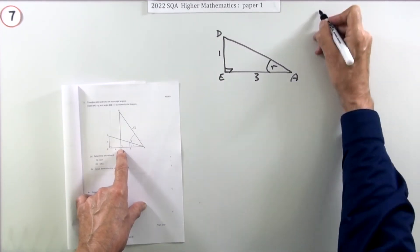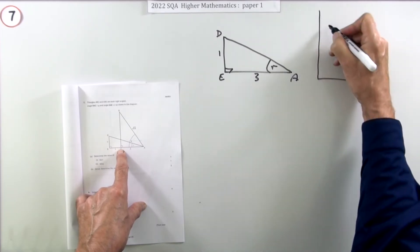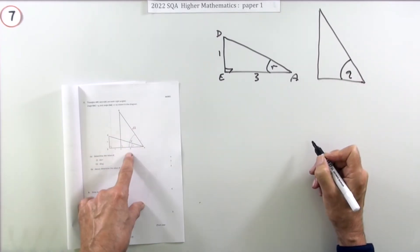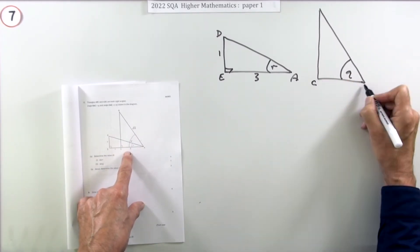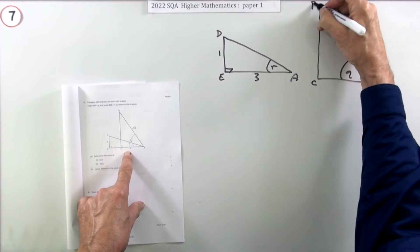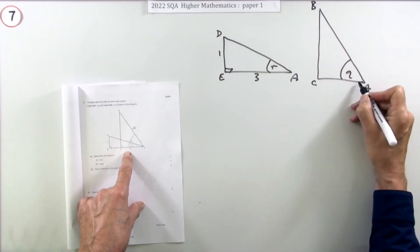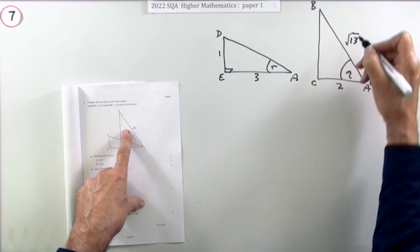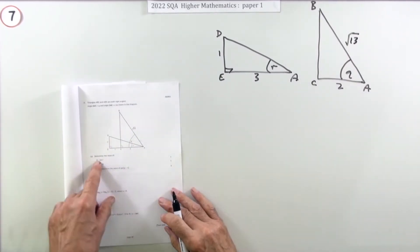The other triangle is this one. Not quite drawn to scale. This is the one with Q in it, the whole angle there. That's the triangle ABC. That side is 2, this side is root 13. Now I can go ahead and find what it wants.